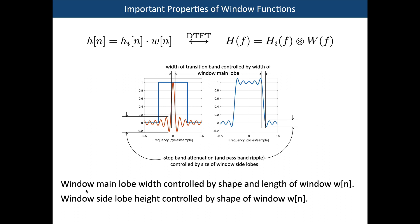Two key principles: the window main lobe width is controlled by both the shape and length of the window function in the time domain, while the window side lobe height is controlled only by the shape. If you change the length of the window in the time domain, it doesn't change the height of the side lobes — it only influences the width of the main lobe.